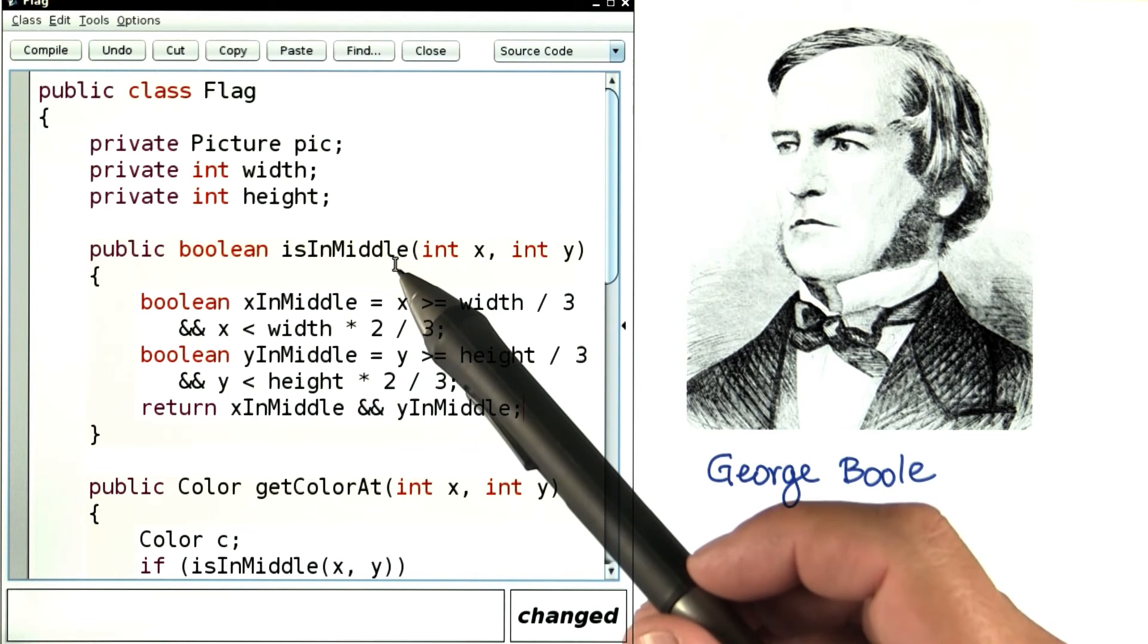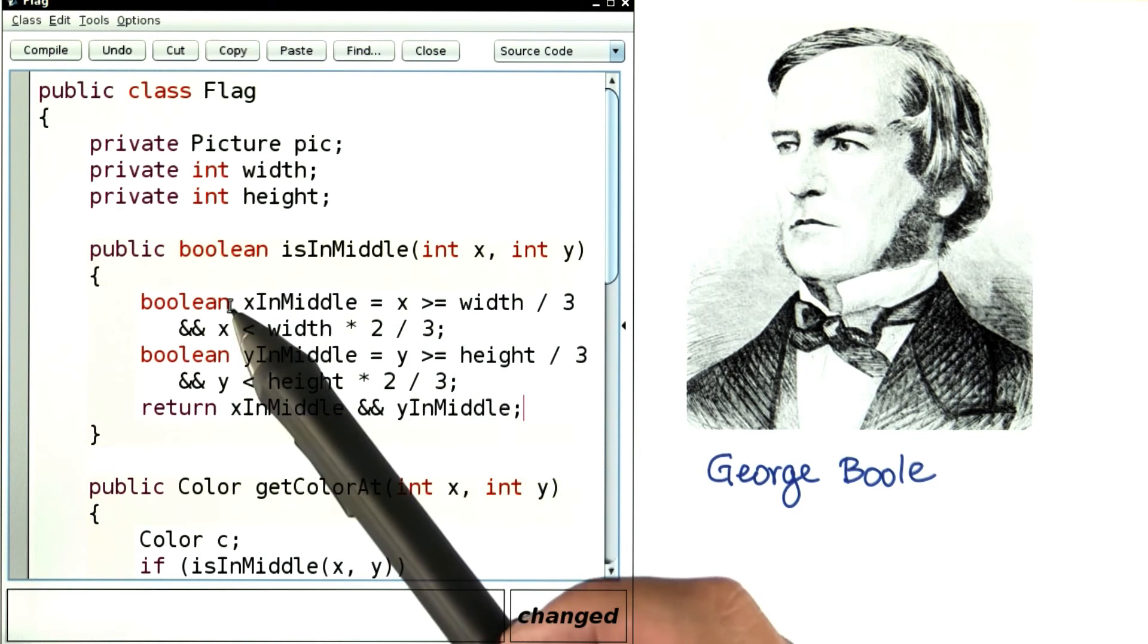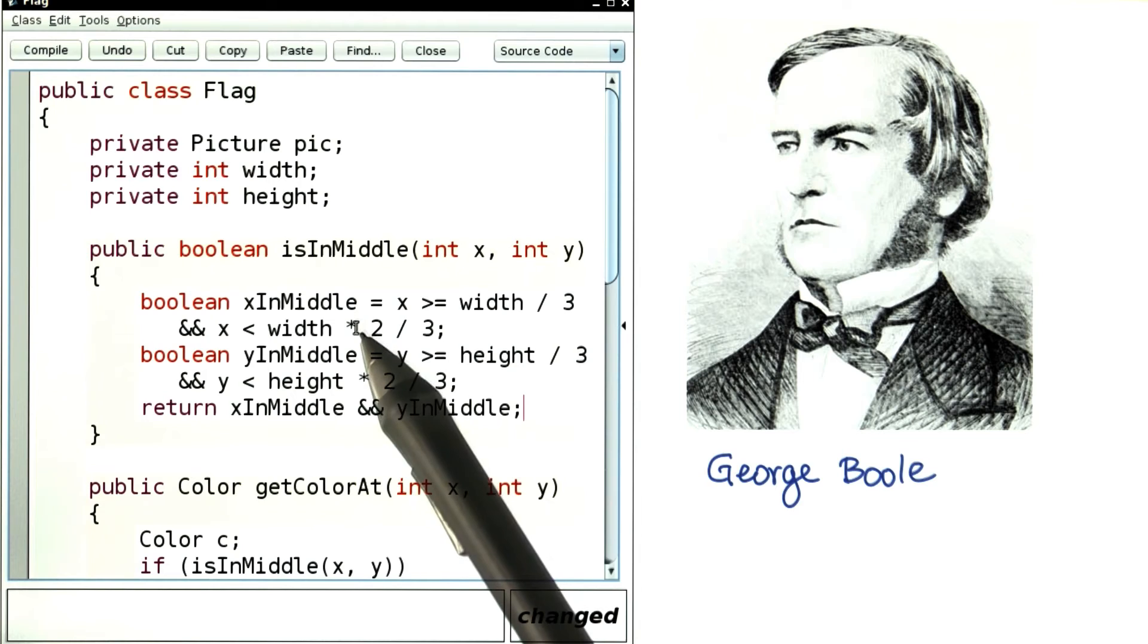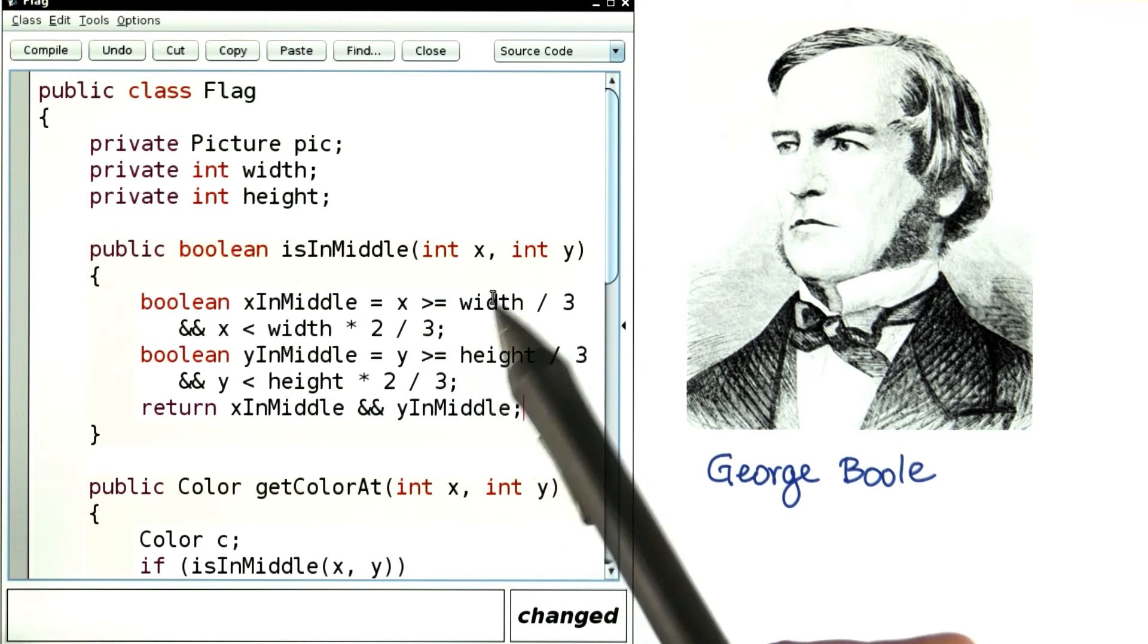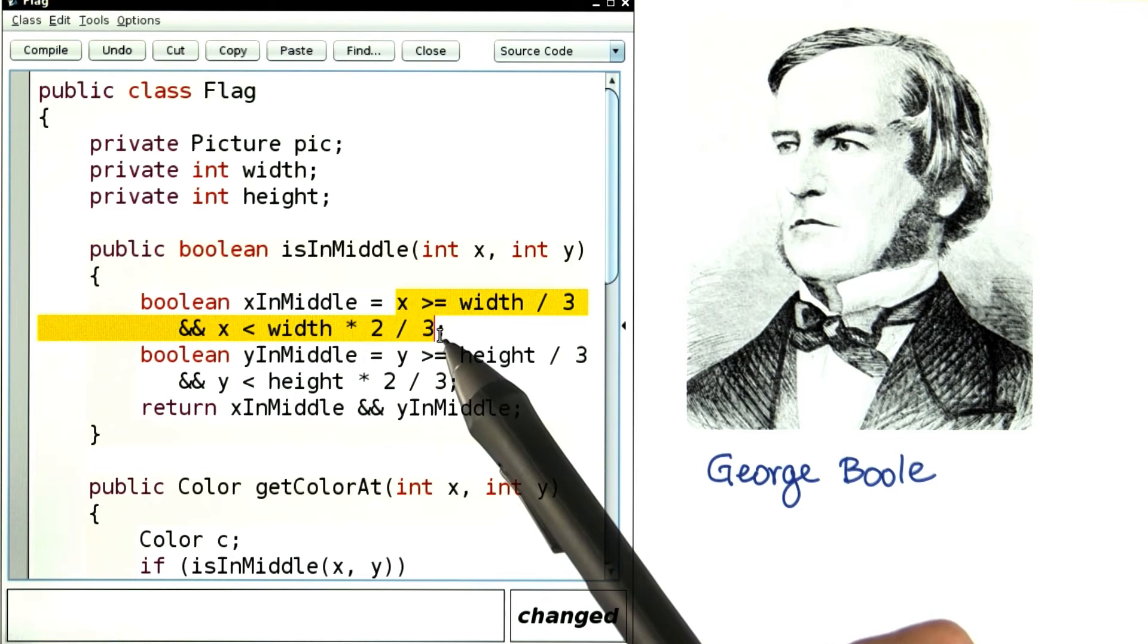I've re-implemented the isInMiddle method to use two Boolean variables. Let's check it out. The first variable, xInMiddle, checks whether x is between one third and two thirds of the width. It's set to true if this condition is fulfilled or to false if it's not.